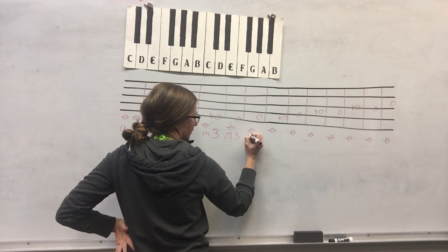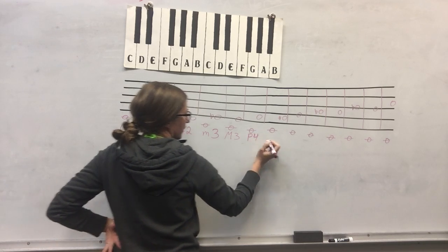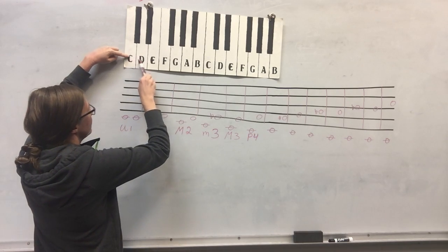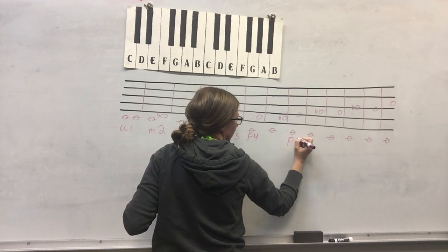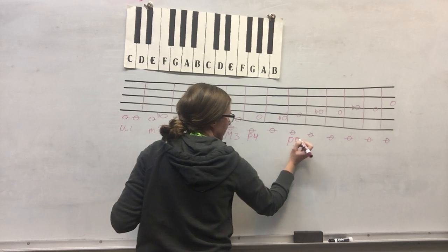Then I have C to F, it's one, two, three, four. I only have one option for a fourth, it's a perfect. Same thing with the fifth: one, two, three, four, five. C to G is my perfect fifth.